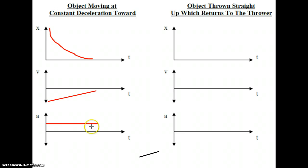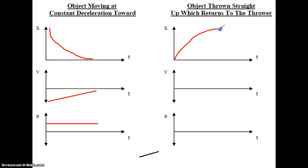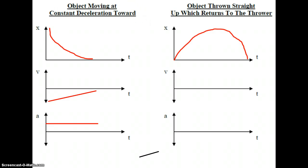Last one: an object thrown straight up which returns to the thrower. This is a combination of two graphs we've already done. The object increases in distance going away from the ground but slows down, comes to rest, and then returns. This results in a nice hill shape on the XT graph, showing that it speeds back up but loses X distance. For the VT graph...